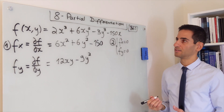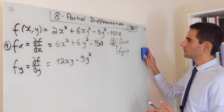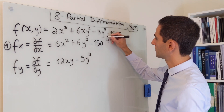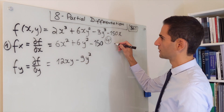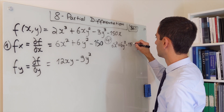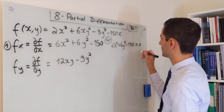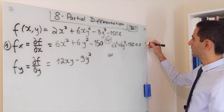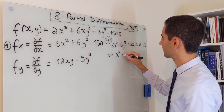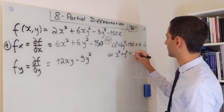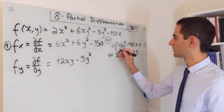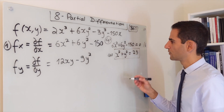Step two: set both partial derivatives to zero. For Equation 1, we write 6x² + 6y² − 150 = 0. We can divide all terms by 6, giving x² + y² = 25, taking the 25 to the other side. This is our Equation 1.